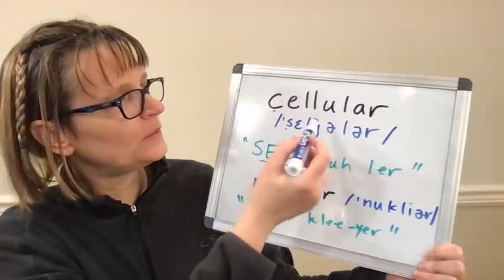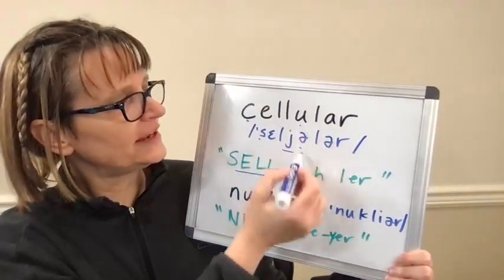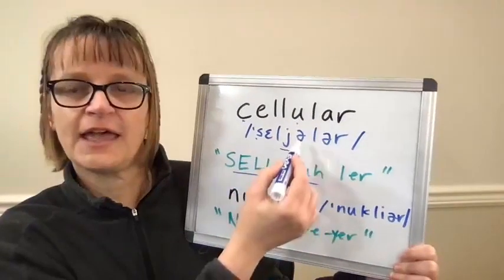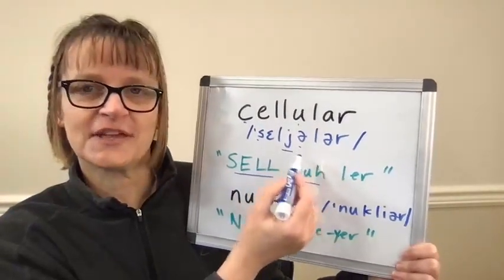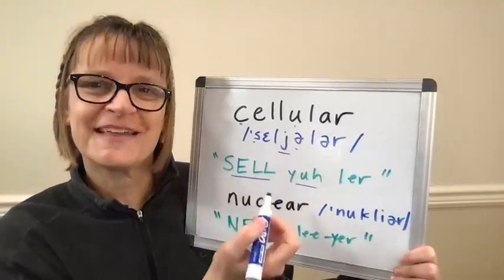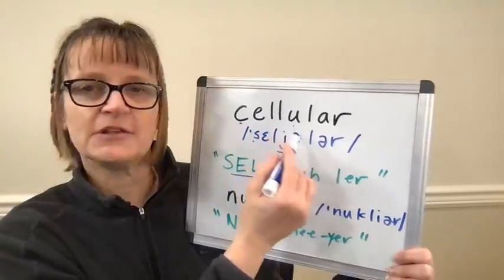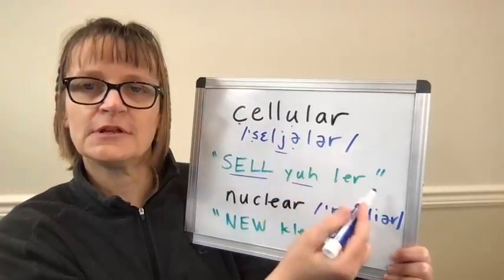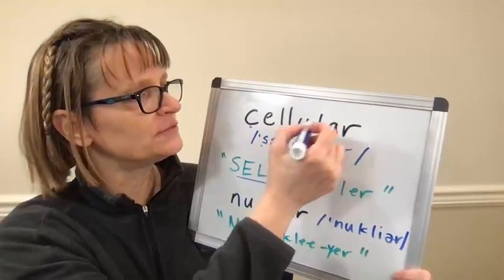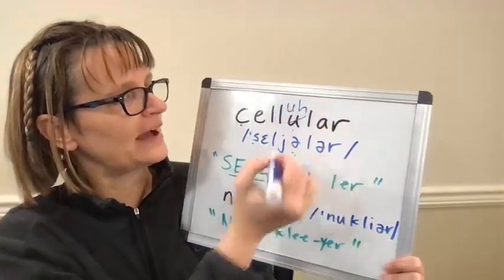When we get to the middle syllable, here we have the letter U, but we have two sounds: we have the glide 'yuh,' and this letter U says the 'uh' sound here. That's because we're stressing on that first syllable 'cell,' so we don't say 'cell-u-lar,' but rather 'cellular,' 'cell-ya.' This vowel gets reduced to more of an 'uh' sound, or vowel schwa.